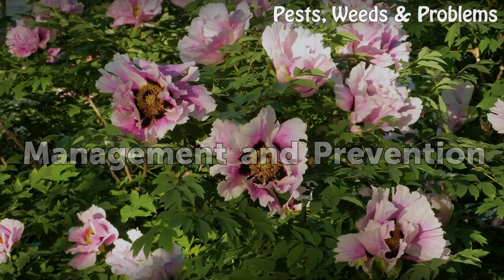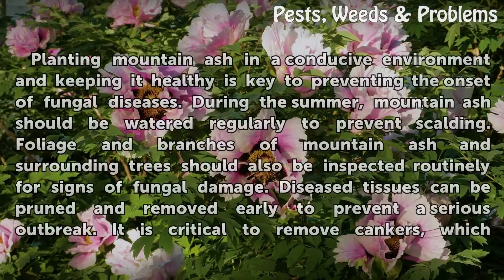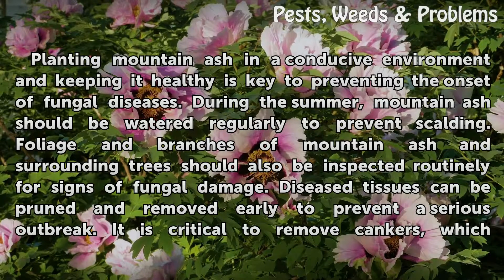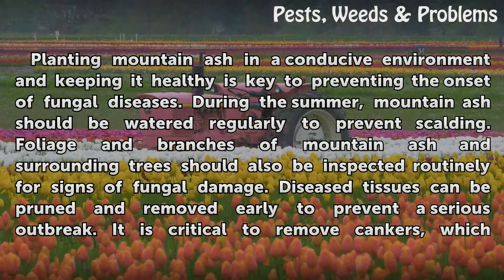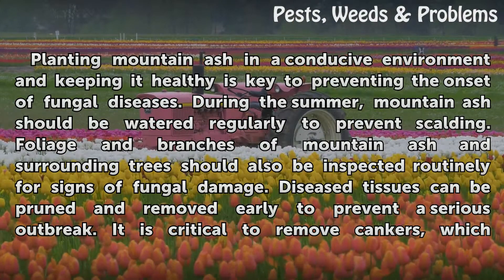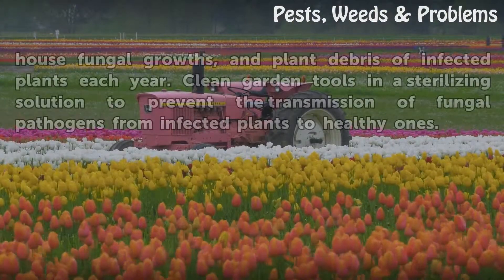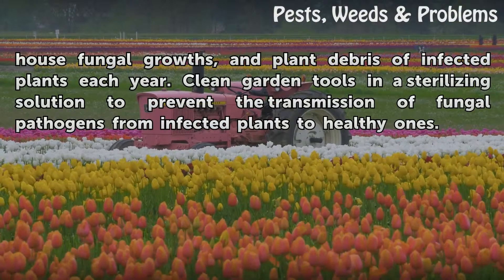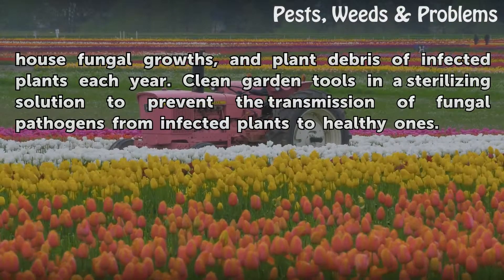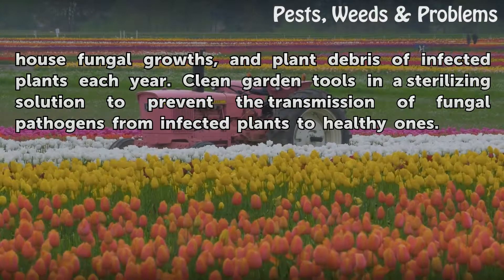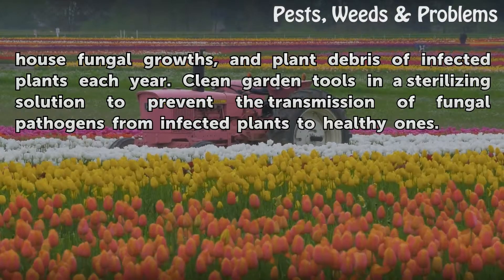Planting mountain ash in a conducive environment and keeping it healthy is key to preventing the onset of fungal diseases. During the summer, mountain ash should be watered regularly to prevent sun scald. Foliage and branches of mountain ash and surrounding trees should also be inspected routinely for signs of fungal damage. Diseased tissues can be pruned and removed early to prevent a serious outbreak. It is critical to remove cankers, which house fungal growths, and plant debris of infected plants each year. Clean garden tools in a sterilizing solution to prevent the transmission of fungal pathogens from infected plants to healthy ones.